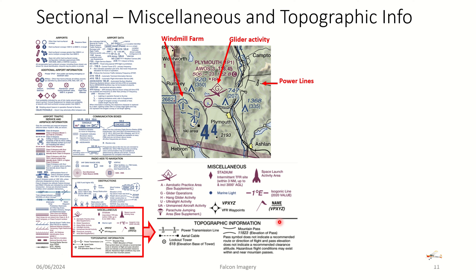The miscellaneous section covers alert areas and special use airspace, as well as aerobatic flying, glider activity, hang glider activity, ultralight activity, unmanned drone activity, parachute jumping, rocket launches, stadiums, isogonic lines, power lines, aerial cables, and other factors relevant to safe flying.